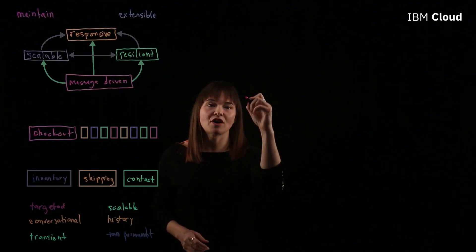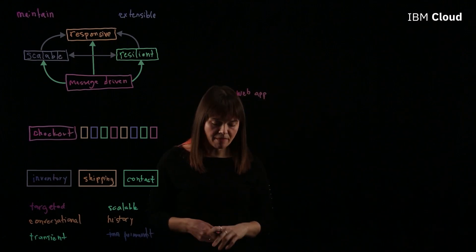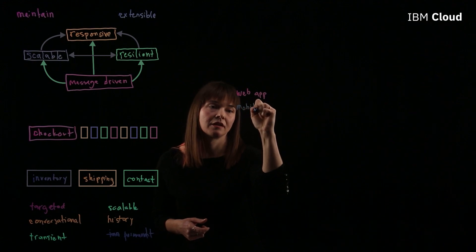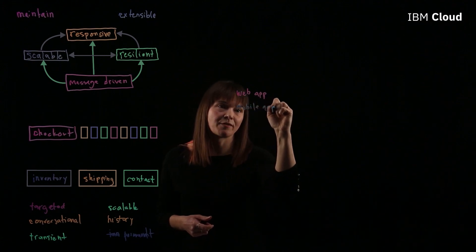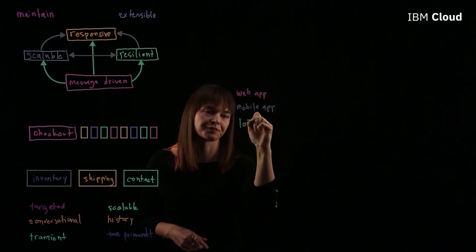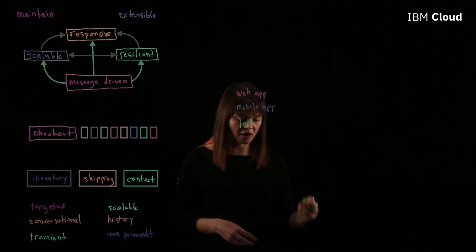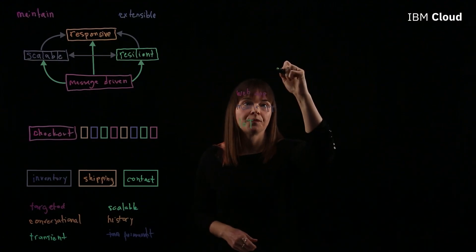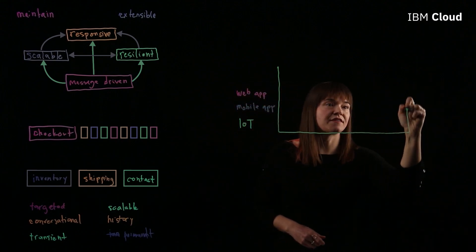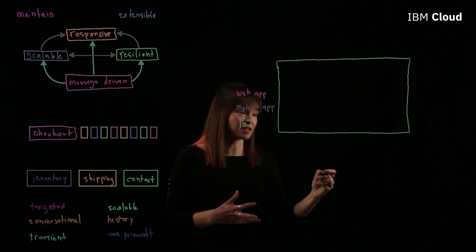So we might have a web application that produces events, and we might have a mobile application, and let's say we also have an edge device that's producing events, an Internet of Things device. And all of these are producing events into our system. So this piece of the system here that has all the events running through it, this is called the event backbone.